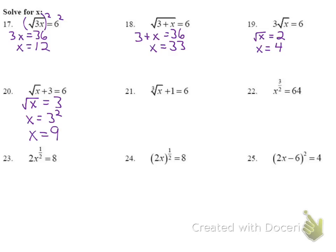For number 21, we have a cube root but follow the same process. I isolate the radical by subtracting 1 from both sides, giving the cube root of x equals 5. Cubing both sides gives x equals 5 cubed, so x equals 125.